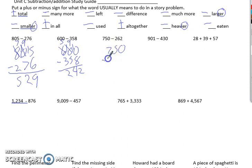Seven hundred fifty minus two hundred sixty-two. Zero minus two, got to go borrow. Five goes to four. He goes to ten. Ten minus two is eight. Four minus six, got to come borrow. He goes to six. He goes to fourteen. Fourteen minus six. Six minus two.